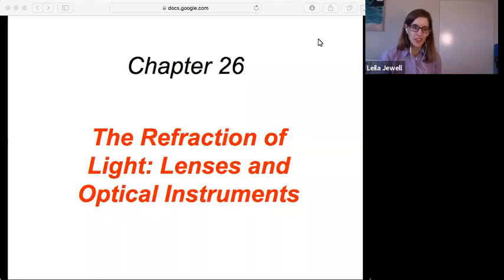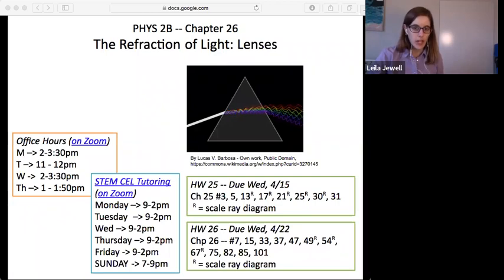Chapter 26, looking at the refraction of light. So chapter 25 was the reflection of light with mirrors. Now with the refraction of light we're going to get into lenses and other optical instruments. I'd like to note for a moment that we do have in the slides the homework assignments, which are also in Canvas.